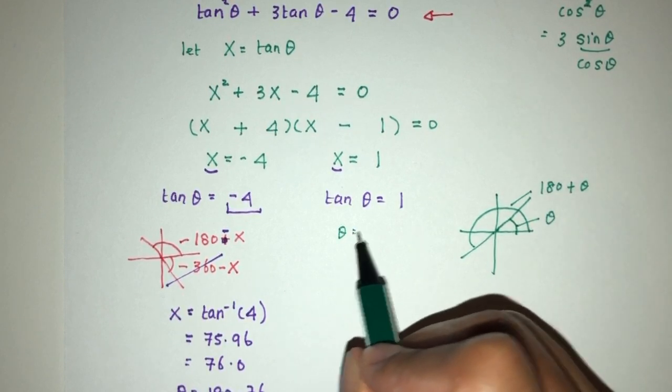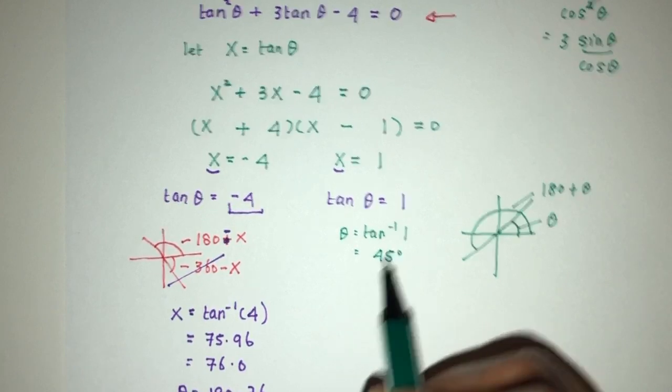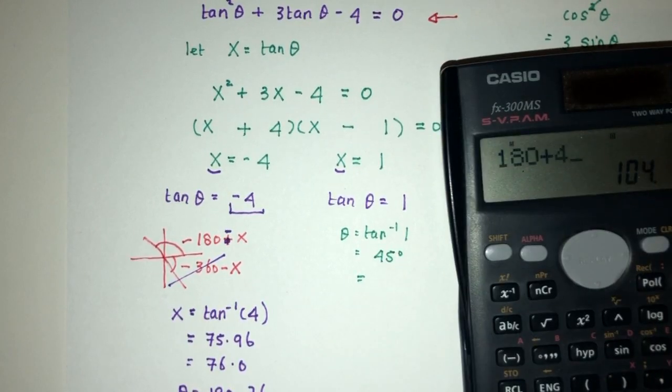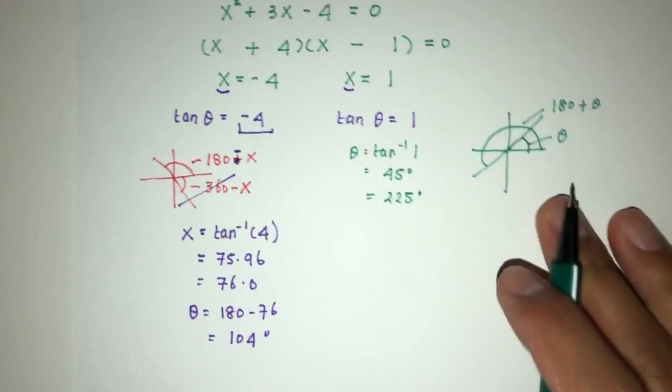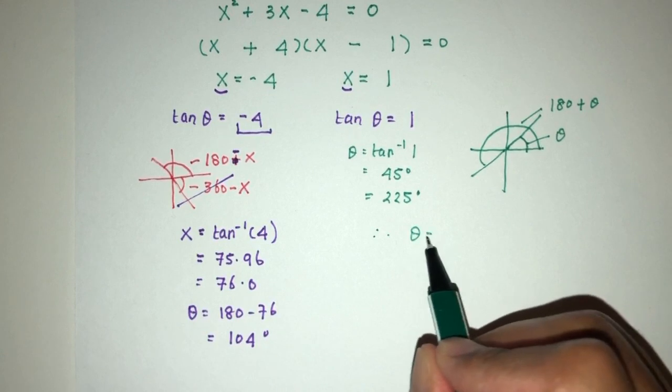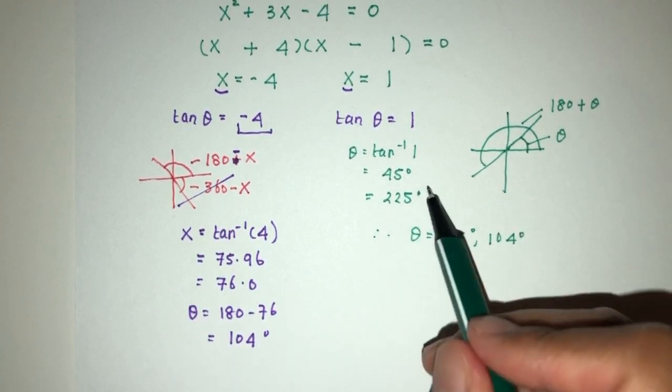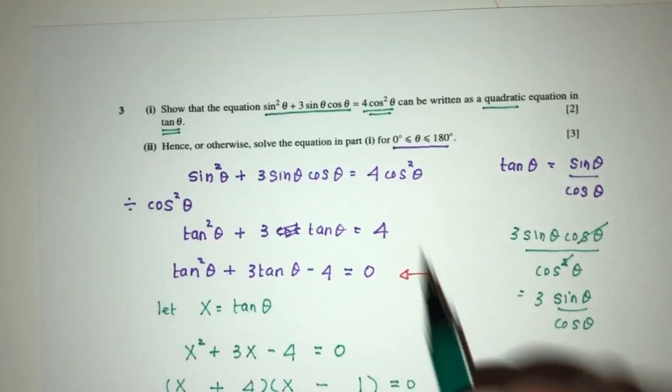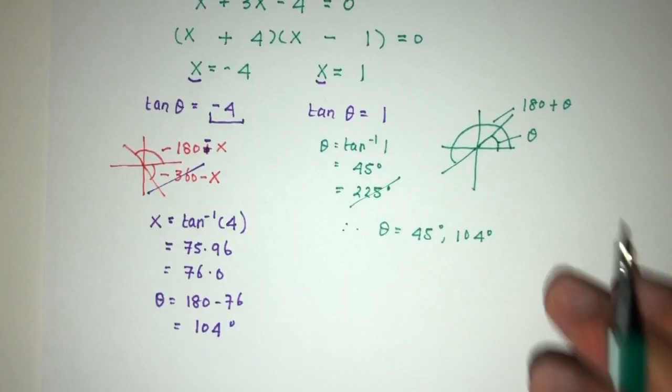So θ will be simply tan inverse of 1, that will be 45 degrees, and also we have 180 plus 45, that will be 225 degrees. So there we go, θ will be 45 degrees and 104 degrees. This one will be outside of the domain we need, so it will not be taken as the final answer.